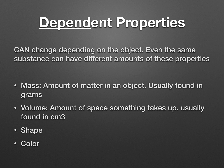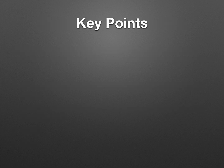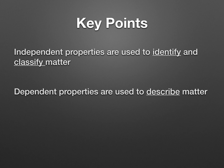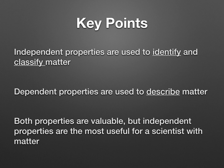For example, 40 pieces of paper can have different colors and they're all still paper. Two key points to write down: independent properties are used to identify and classify matter, and dependent properties are used to describe matter. Remember, we said properties of matter are used to describe, identify, and classify. Both properties are valuable, but independent properties are the most useful for a scientist working with matter. That's the end of these Flip Notes — any questions, please write them down and I'll be happy to answer when you get back to class.